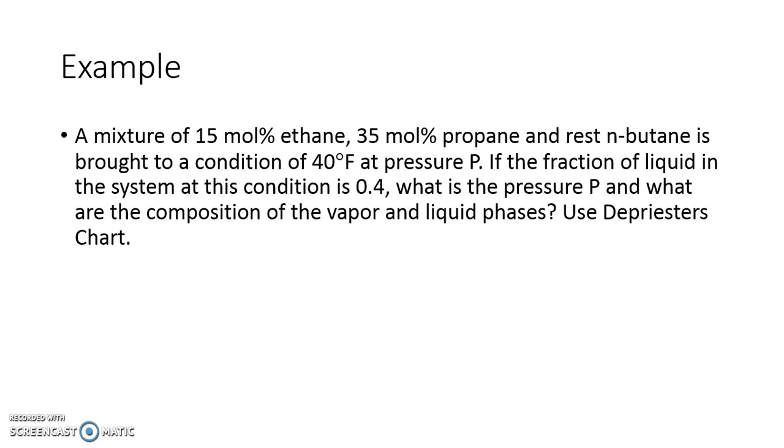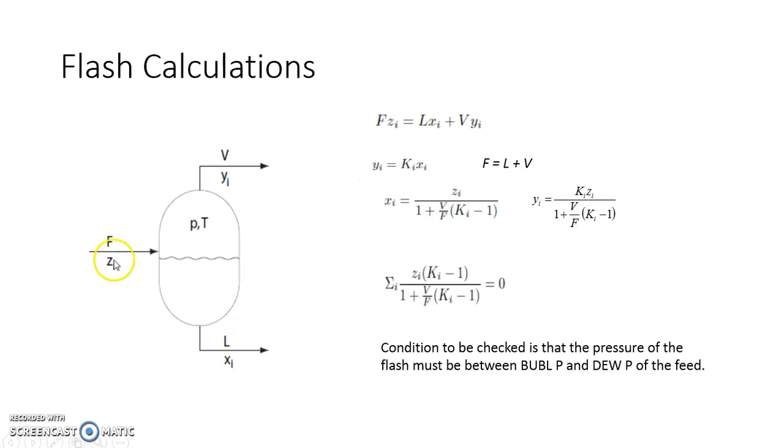The temperature is given 40 Fahrenheit and it is saying that if the fraction of the liquid in the system at this condition is 0.4, what is the corresponding pressure? That means what have been provided here is temperature, Z and feed composition, and we are told that L is 0.4, that is 40 percent. Other way around, V is 0.6.